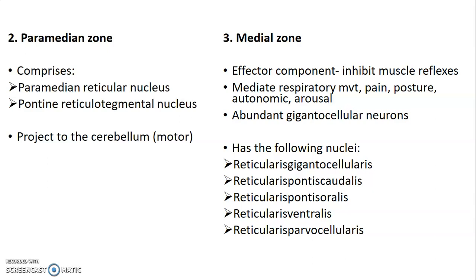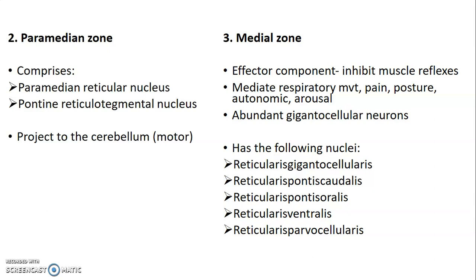The medial zone has abundant giant neurons. The nuclei located at the medial zone are: reticularis gigantocellularis, reticularis pontis caudalis, reticularis pontis oralis, reticularis ventralis, and reticularis parvocellularis.